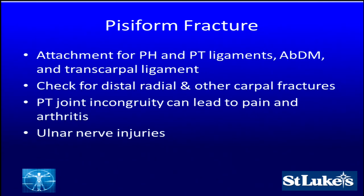And the eighth bone is the pisiform. You can certainly get pisiform fractures — that's the attachment for the pisohamate and pisotriquetral ligaments, abductor digiti minimi, and transcarpal ligament. They have a high incidence of associated fractures to the distal radius and other carpal bones, so check for these. Pisotriquetral joint incongruity tends to lead to pain and pisotriquetral joint arthritis. And since the ulnar nerve is right next to it, ulnar nerve injuries are certainly common, whether immediately upon presentation or as late sequelae.